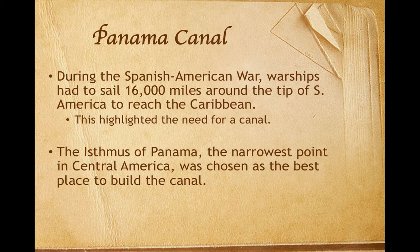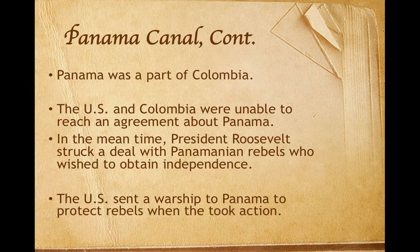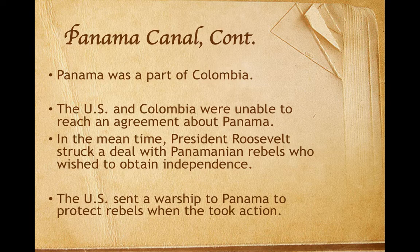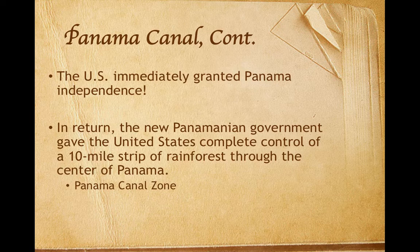The Panama Canal. During the Spanish-American War, warships in the Pacific Fleet had to sail 16,000 miles around the tip of South America to reach the Caribbean. This highlighted the need for a canal to send ships between the two oceans instead of maintaining two separate naval fleets. The Isthmus of Panama, the narrowest point in Central America, was the best place to build this canal. At this time, Panama was part of Colombia. The United States and Colombia entered into negotiations but could not agree. While President Roosevelt was waiting to hear from Colombia, he struck a deal with Panamanian rebels who wished to obtain their independence. Roosevelt sent a U.S. warship to Panama to protect the rebels when they took action. Following the uprising, Roosevelt recognized Panama as a new independent country. In return, the new government of Panama gave the United States complete control of a 10-mile strip of rainforest through the center of Panama, known as the Panama Canal Zone.